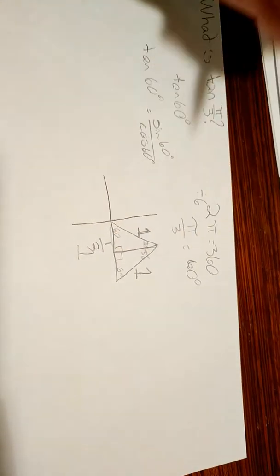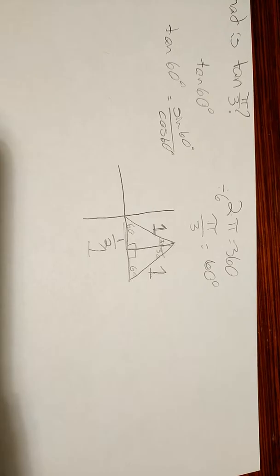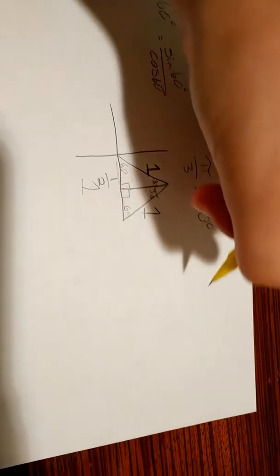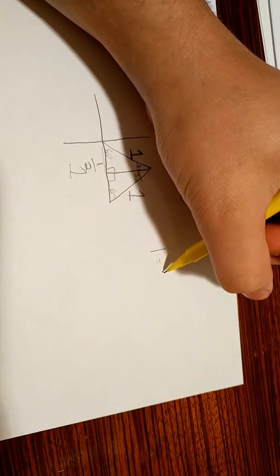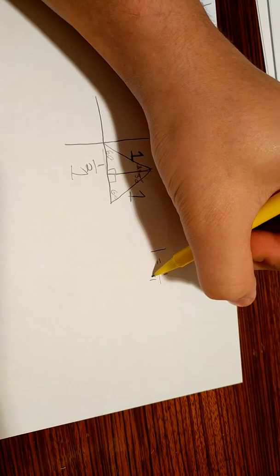And now, I just need to find this length right over here, and then we'll have all the sides to the triangle, and I'm going to be able to find out the sine and cosine. So, the hypotenuse is 1, and 1 squared is also 1. So, that's going to be equal to 1 half squared, which is 1 fourth.